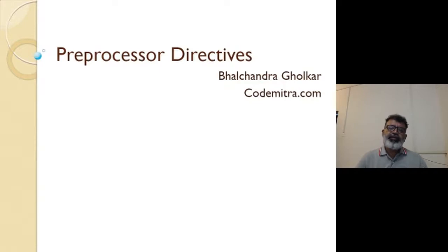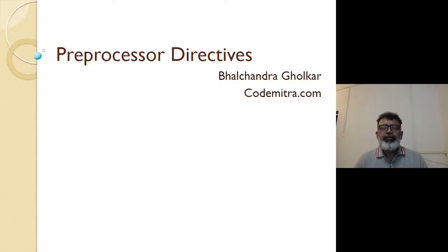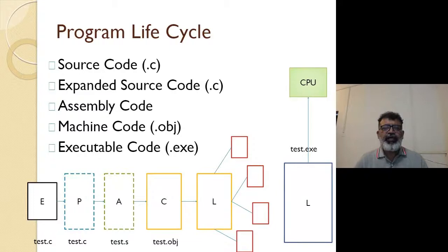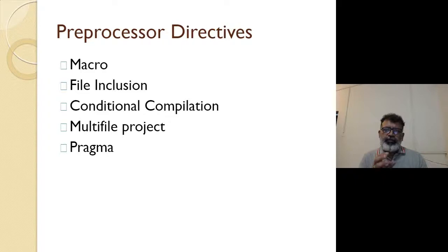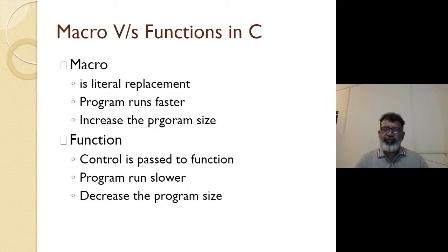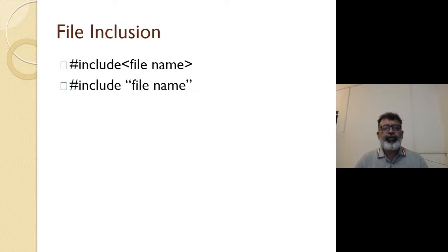This week we have been discussing preprocessor directives. We have seen macro and macro expansion, then the program life cycle. We also covered parameterized macros. We have seen how various systems come into the picture during the program life cycle. We have discussed file inclusion, and how a C program can be split into multiple files, which we are going to see today. We have also seen macro versus function differences.